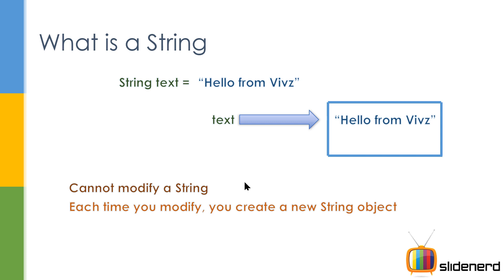For example, this 'hello from Veeves' — if you convert that to uppercase, capitalizing every letter, or if you convert that to lowercase by changing everything to small, then no matter what you do, you're creating a new object. You cannot modify the original object as it is.